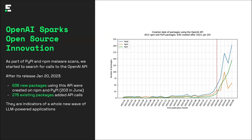Almost 300 packages that already existed before also added support for OpenAI through its API. This is only the tip of the development — it only shows packages that made it to NPM and PyPI. There are numerous additional proprietary and private efforts to use LLMs for all kinds of purposes. We find it a very nice indicator of a whole new wave of LLM-powered applications that will be coming.